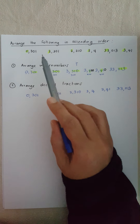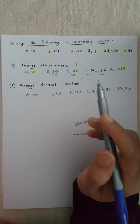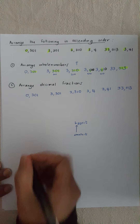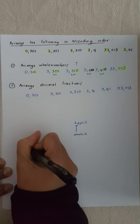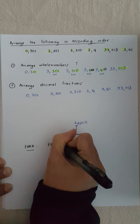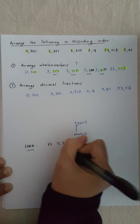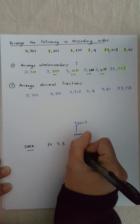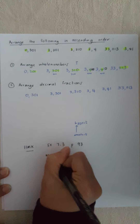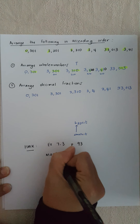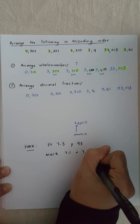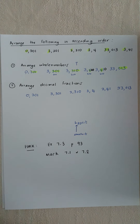Normally we just have whole numbers, but this question is about arranging decimal fractions in ascending order. Your homework for today would be Exercise 7.3, on page 93 — I'll put a picture of it. And then we have to mark 7.1 and 7.2 today.